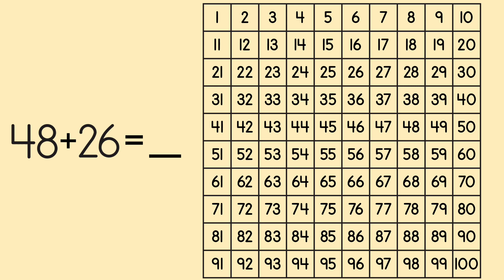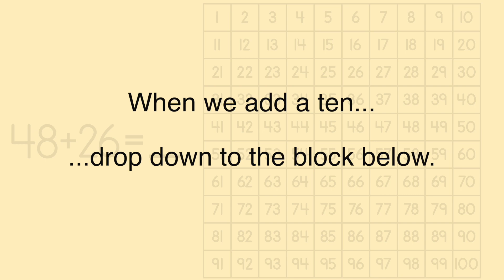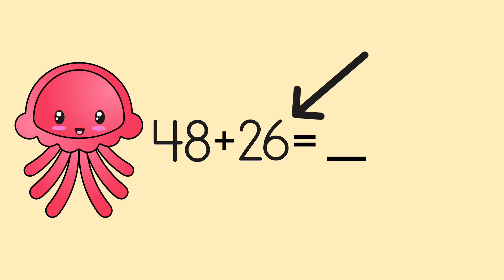Now, if you remember a couple lessons ago, we talked about adding tens on a hundreds chart. Remember, when we add a 10, we just drop down to the block below. So we're adding 26 to 48. Let's take a look at the number 26. 26 is 20 plus 6.